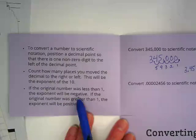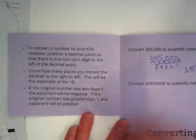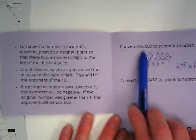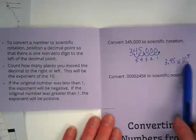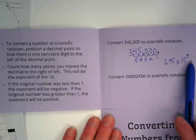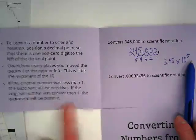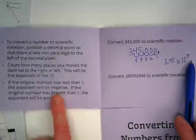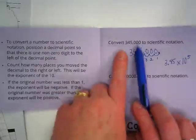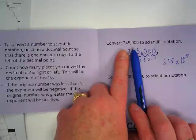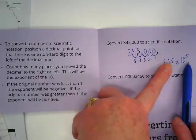If the original number was less than one, the exponent will be negative. Was this original number less than one or greater than one? It was greater than one. So my exponent is going to be positive then. If the original number was greater than one, the exponent will be positive. If it's less than one, it's going to be negative. So since we started out with a number above one, the exponent is going to stay positive.